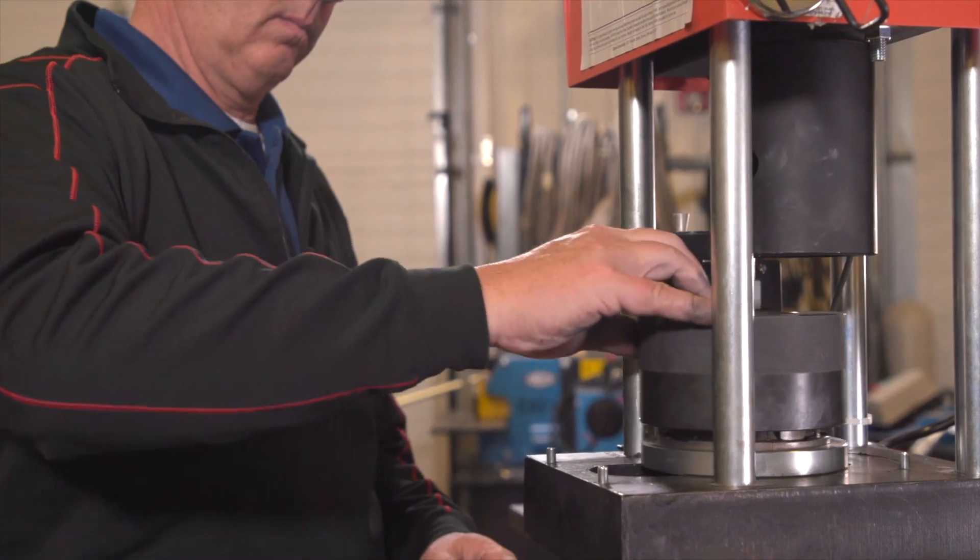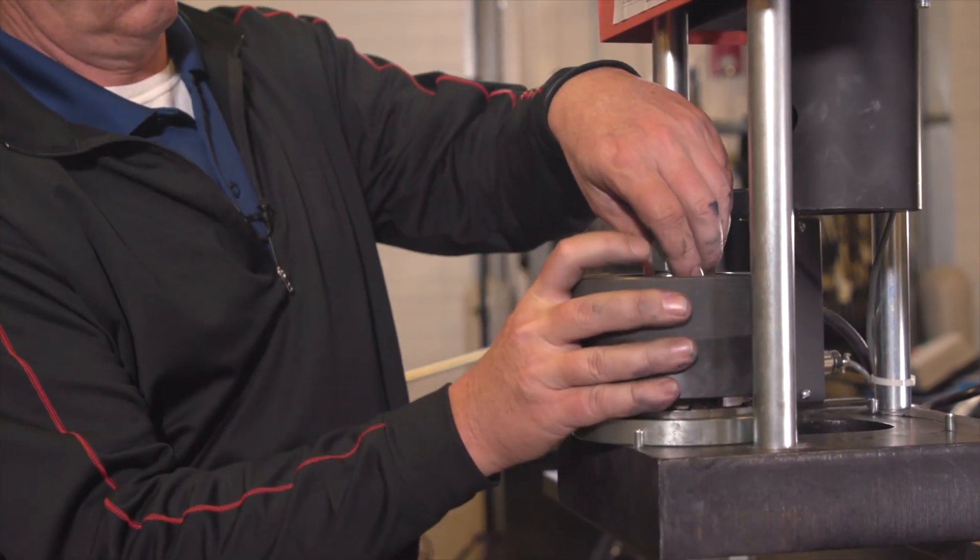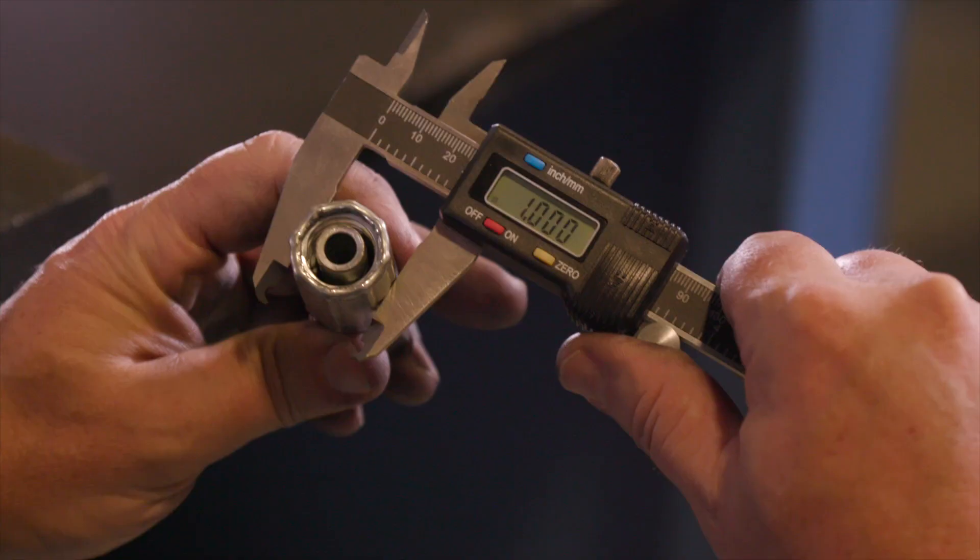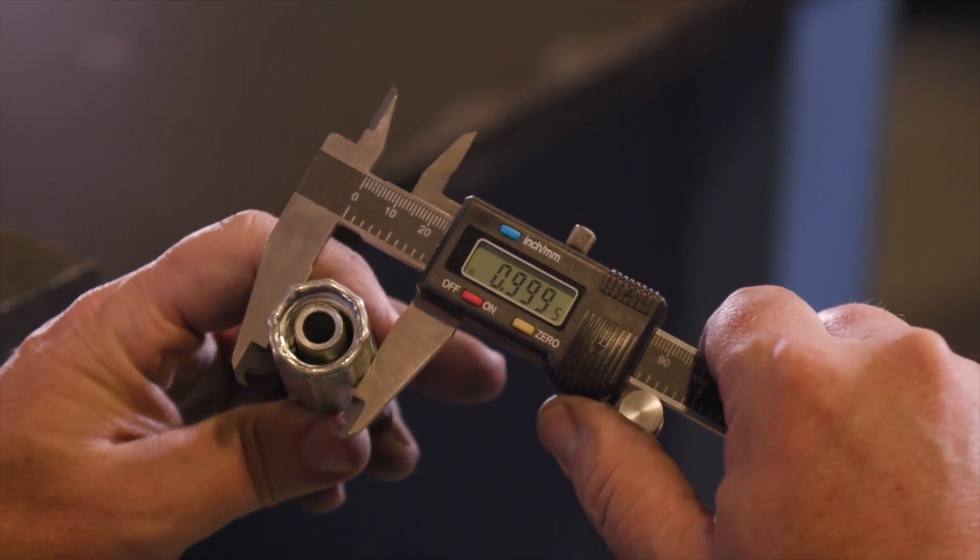Remove the coupling and measure the crimp diameter, which should measure 1.000 inches, plus or minus three thousandths of an inch.